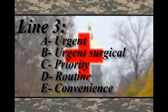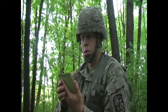Line 3 is the number of patients by precedence. Alpha — Urgent: patient who should be evacuated as soon as possible and within two hours to save life, limb, or eyesight. Bravo — Urgent Surgical: patients who must have far-forward surgical intervention to save life and stabilize for further evacuation. Charlie — Priority: patients who should be moved within four hours or their condition will deteriorate to urgent. Delta — Routine: personnel not expected to worsen significantly, requiring evacuation within 24 hours. Echo — Convenience: patients for whom evacuation is a matter of medical convenience rather than necessity. Example: Lima 3, One Bravo, One Charlie.